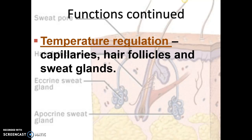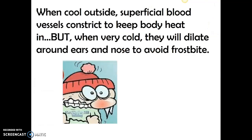Sweat glands produce sweat because when you put moisture to the surface and moisture evaporates, evaporation is a cooling process. To reiterate: when it's cool outside, your superficial blood vessels are constricted by the smooth muscles around them and they keep the body heat in.